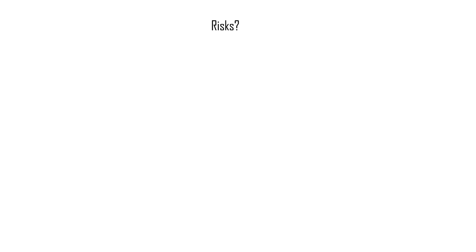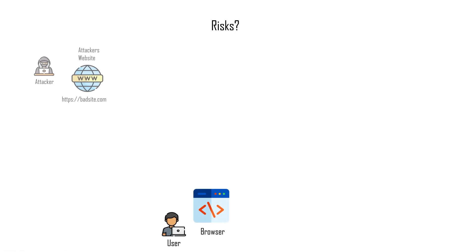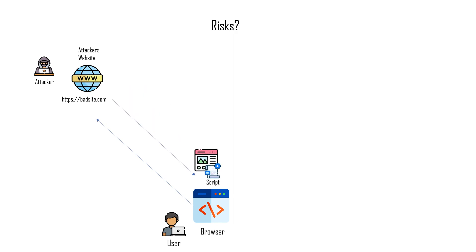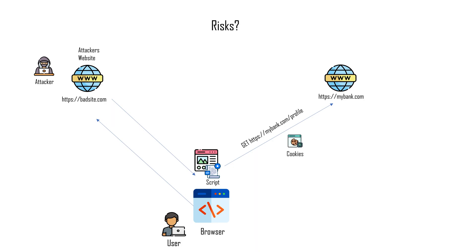But what are the risks of wrong CORS configuration? Why is same origin policy important? Whenever a user visits a malicious website, as a response he receives a web page that might contain a script which calls another website's API. It might even be a banking web app. If the user is already authenticated to the web app, the browser will automatically attach cookies to the request, so the script acts on behalf of the user and might read or even update his personal data.